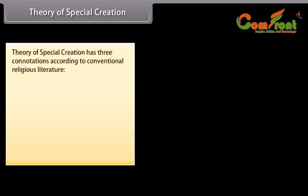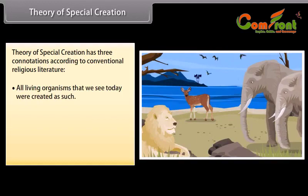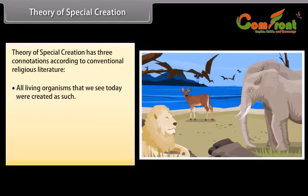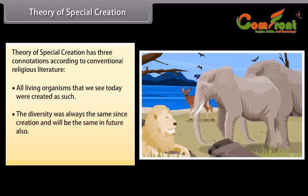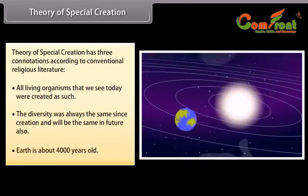Theory of Special Creation. The Theory of Special Creation has three connotations according to conventional religious literature: all living organisms that we see today were created as such; the diversity was always the same since creation and will be the same in the future; and Earth is about 4000 years old.